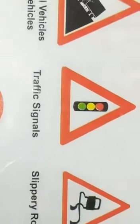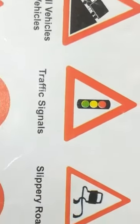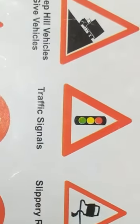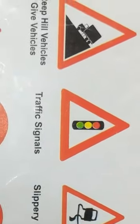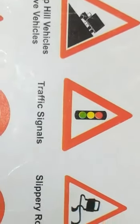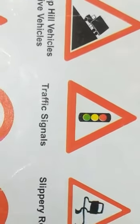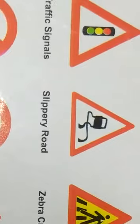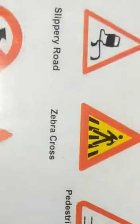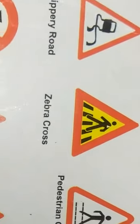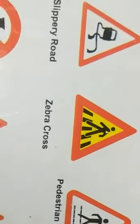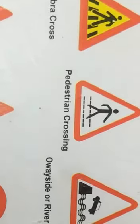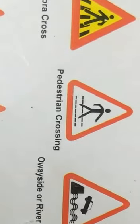And this is traffic signals. We know that in traffic signals we have three colors: red, yellow, and green. And this is slippery road. And this is zebra crossing. And this is pedestrian crossing.